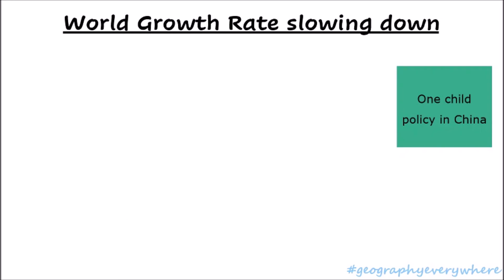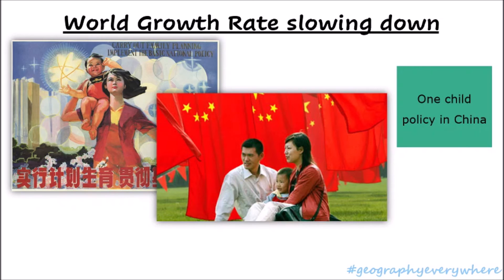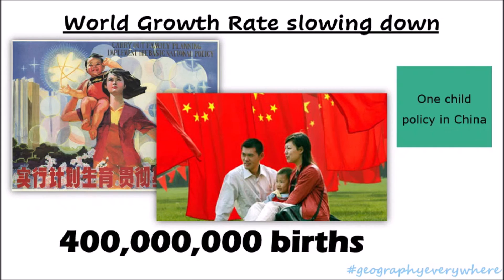Another reason the world growth rate is slowing down is China's one-child policy. In 1979, China created this policy, encouraging people to only have one child. Parents who had more than one child faced fines and other punishments. Since many people were having fewer children, the one-child policy reduced the growth rate. Chinese officials say the one-child policy has prevented over 400 million births, although scientists argue that this number might be a bit smaller.